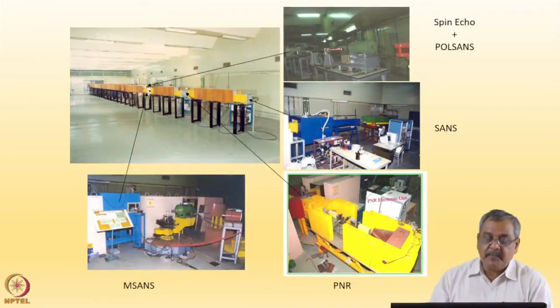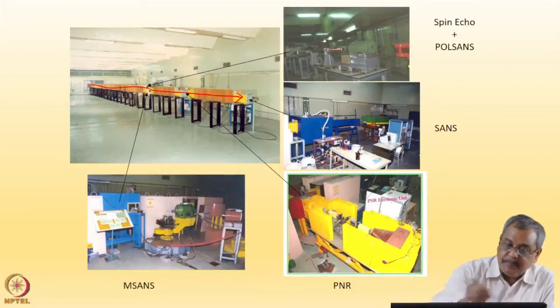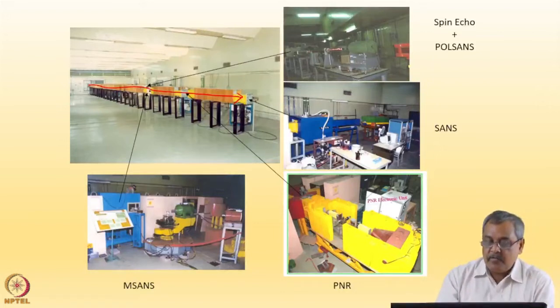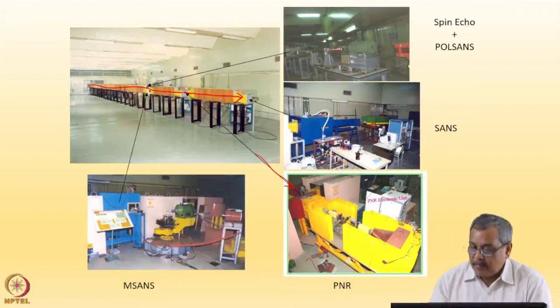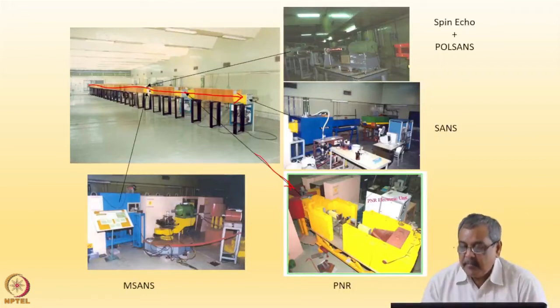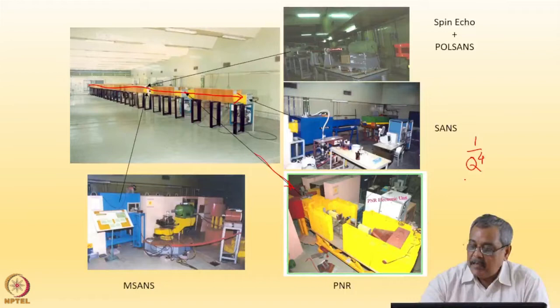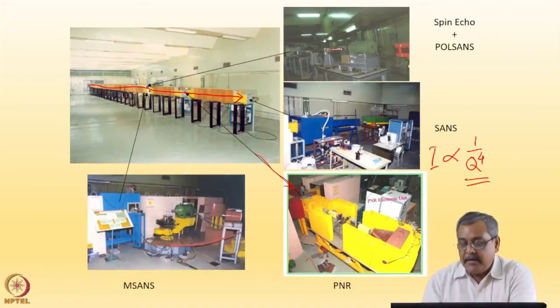First, let me show you the instrument at Dhruva at Trombay, India. This is the guide tube where neutrons are flowing down. I showed you earlier there are two small angle instruments on this guide. At this gap we have what is known as a PNR or polarized neutron reflectometer. The whole instrument is kept inside a shielding pit because reflected intensity falls as 1 by q to the power 4 with angle, meaning it falls very rapidly, and we need to minimize the background at the detector to the extent possible.